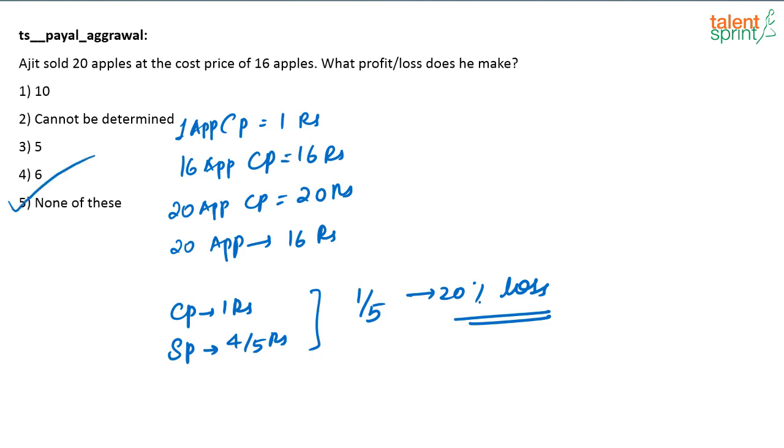So here the answer will be none of these. Not the option for a loss of 4 apples. 4 out of 20, that is also correct. 20 percent.